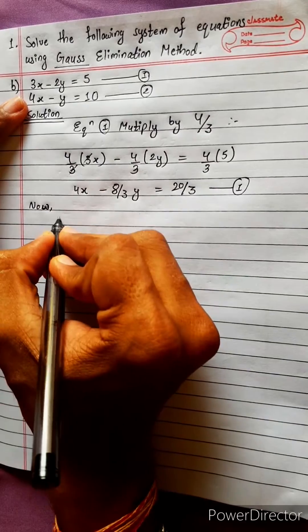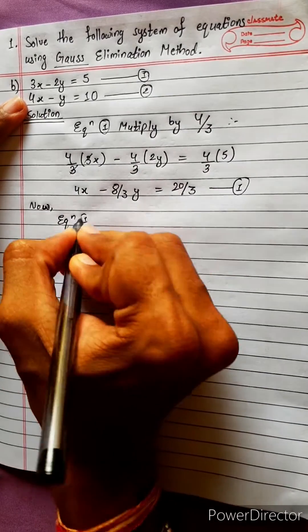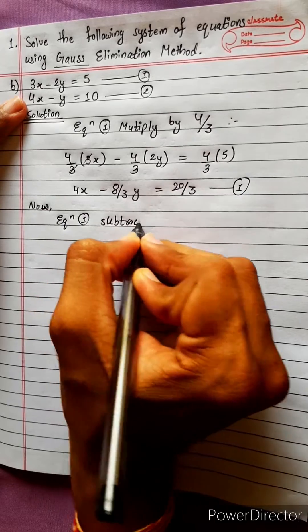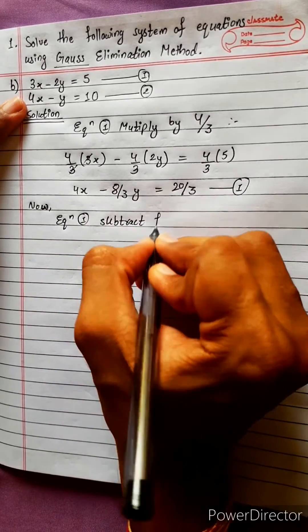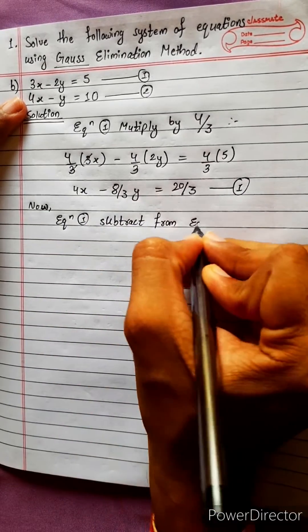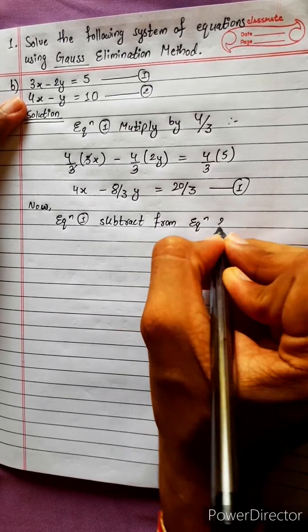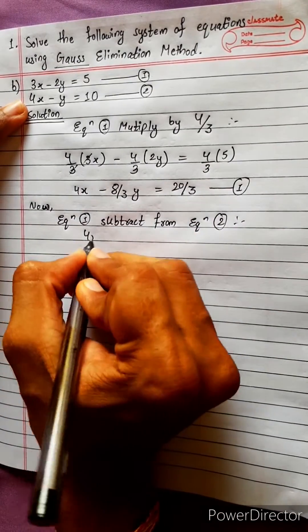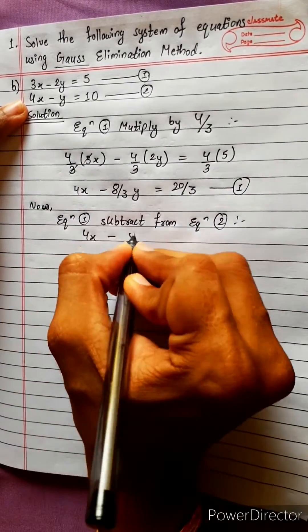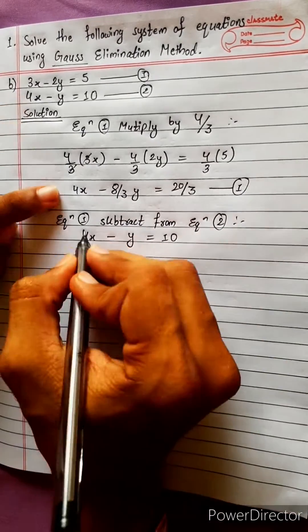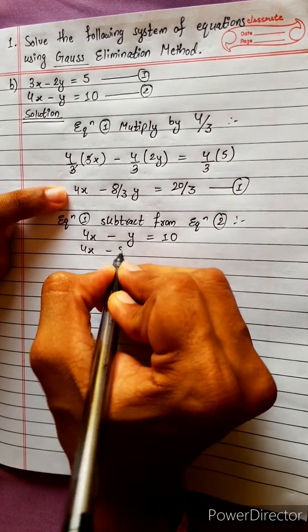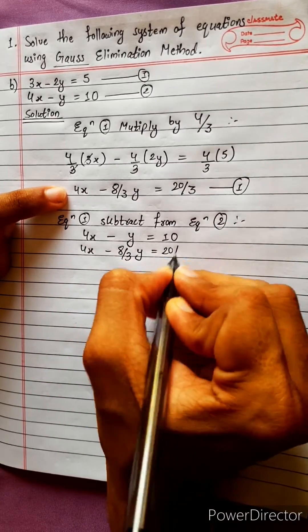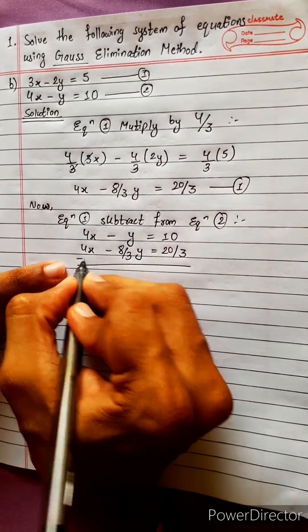Now subtract equation 1 from equation 2. Equation 2 is 4x minus y equals 10, and equation 1 is 4x minus 8/3 y equals 20/3. We perform the subtraction.